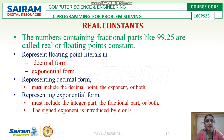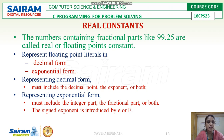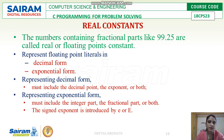Real constants consist of fractional parts, such as 99.25. If a number contains both a whole part and a fractional part, it is called a real constant. Real constants can be represented in two forms: decimal form and exponential form. In decimal form, the number must include a decimal point followed by the exponent.